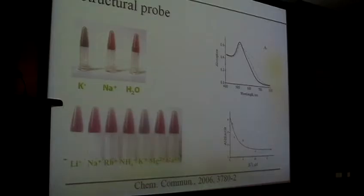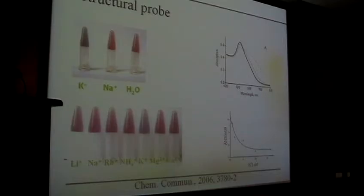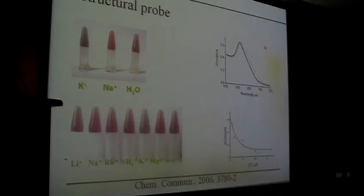This UV-Vis absorption spectrum shows that the SPR absorption peak shifts to the red for the potassium sample. This structure is highly specific — it only responds to potassium, not to other metal ions like lithium, magnesium, calcium, and so on.